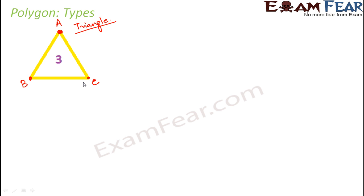You might ask why we start with three — can't we have a polygon with two sides? We can't, because with two sides it will be an open curve, not a closed curve, and a polygon has to be a simple closed curve. Can you form a polygon with one side? Definitely not — it is not a closed curve either. So in order to be a polygon, you need a minimum of three sides, and of course you can have more.